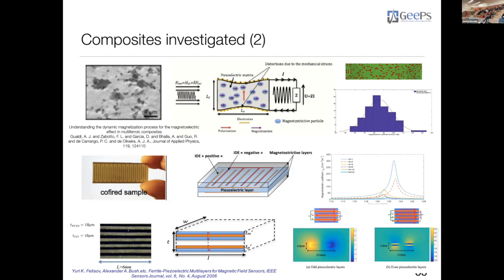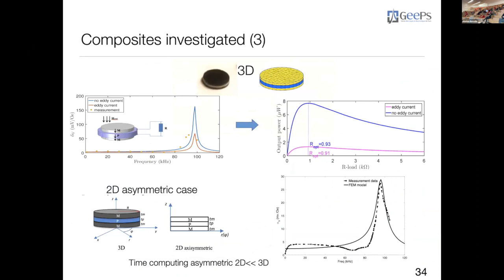We also handle multi-layer systems. With the finite element tools, it is possible to study any structure. We have developed 3D tools to study specific composite structures, but also a 2D axisymmetric case for cylindrical materials. We find the same results and good agreement with measurement, but the axisymmetric tool is much faster — a few seconds — compared to about one to two hours for the 3D case.